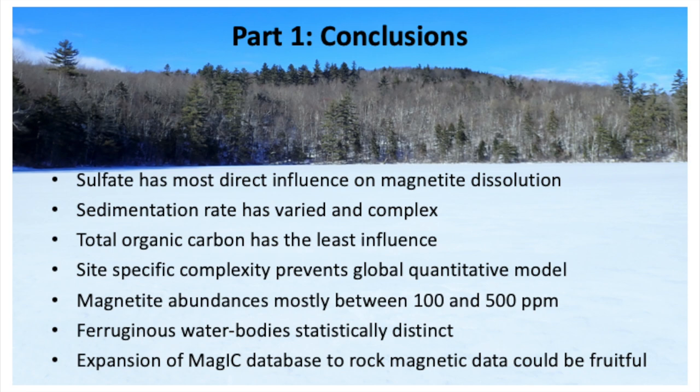Conclusions for this part: sulfate seemed to have the most direct influence on magnetite dissolution. Sedimentation rate was a little more complex. Total organic carbon seemed to have the least influence. Site-specific complexity really prevented us from feeling comfortable jumping to a global quantitative model for diagenesis. But from a paleo-redox perspective, this global compilation gave us a baseline framework: magnetite abundance in the modern ocean is roughly 100–500 ppm, and ferruginous water bodies could have a distinct value. This process also showed that expanding the MagIC database to rock magnetic data could have real research implications — not just for paleointensity or paleogeographic compilations, but through rock magnetic data as well.